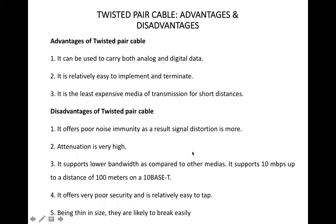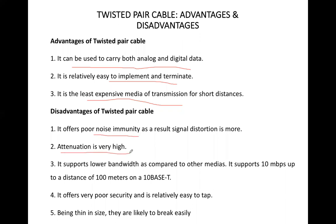Advantages of twisted pair cable: it can carry both analog and digital signals, it is easy to implement and establish connections, adding connectors is easier, and the cost is less. Disadvantages: poor noise immunity, attenuation is very high, bandwidth is low due to the low gauge, it offers poor security because it is easy to tap, and because the copper cable is very thin it can easily break — so it is not durable compared to other transmission mediums.